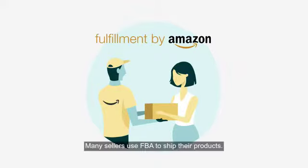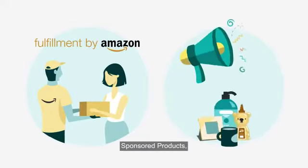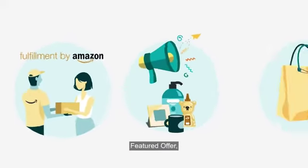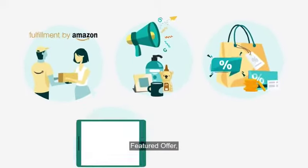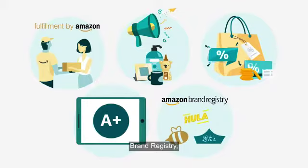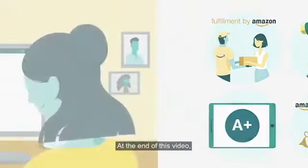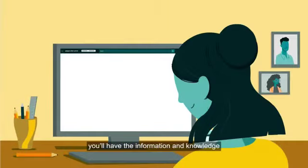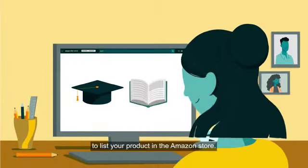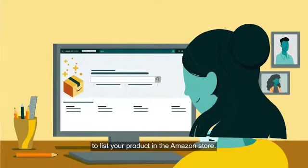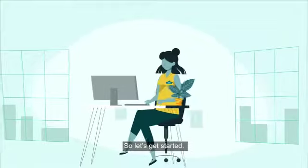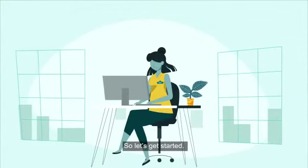Many sellers use FBA to ship their products. We'll also cover Sponsored Products, Featured Offer, A-plus content, brand registry, and Vine. At the end of this video, you'll have the information and knowledge to list your product in the Amazon Store. So let's get started.